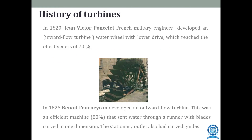Looking at the history of turbines: the inward flow turbine was developed by Jean Victor, a French military engineer, who achieved efficiency of up to 70%. He simply replaced straight vanes with bent ones. After that, Benoit Fourneyron developed an outward flow turbine with improved efficiency of around 80%. The water was sent to the runner with blades curved in one dimension, and the stationary outlet also had curved guides.